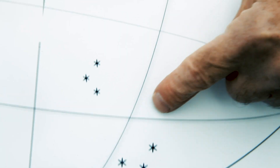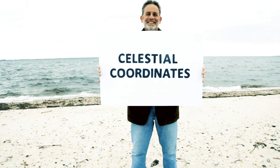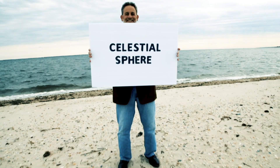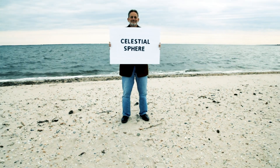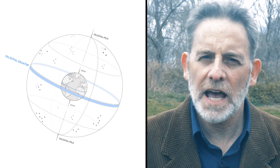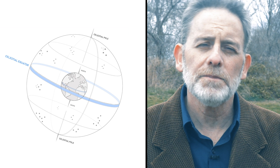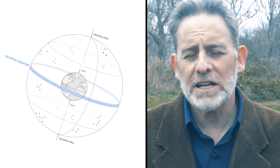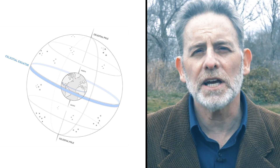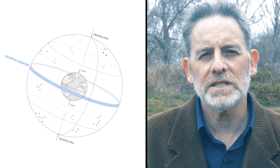Celestial coordinates are similar to Earth's longitude and latitude, and they are mapped onto an imaginary celestial sphere. The celestial sphere is an imaginary sphere that encompasses the entire Earth. Its purpose is to locate the position of astronomical objects. It is the basis of the coordinate system.